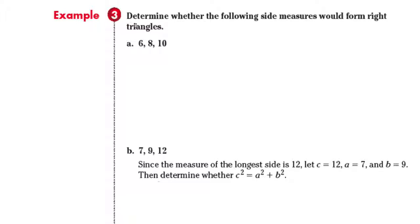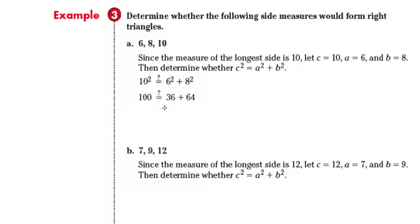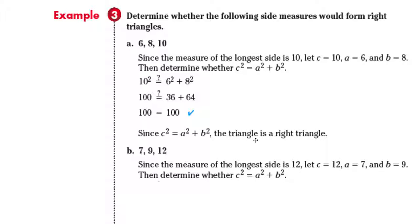Example three: determine whether the following side measures form right triangles — six, eight, and ten. The longest side is always your hypotenuse, so ten would be our C. The shortest side is always B, so B equals 8, and the longer of the two legs is A, so A equals 6. Determine whether C squared equals A squared plus B squared: ten squared equals six squared plus eight squared, which is 100 equals 36 plus 64. The answer is yes, so the triangle is a right triangle.